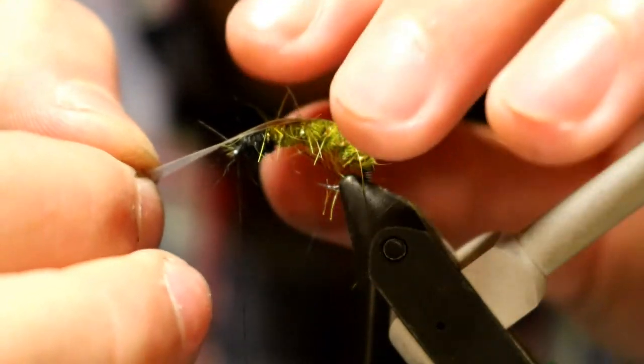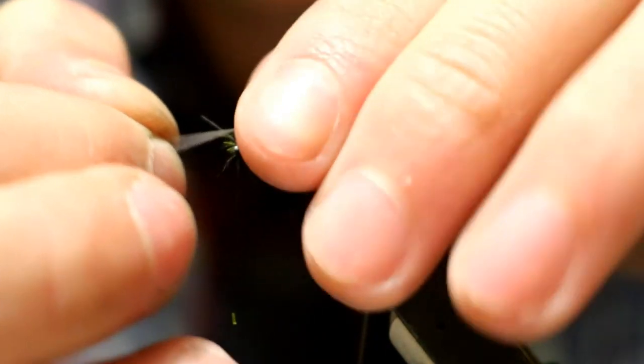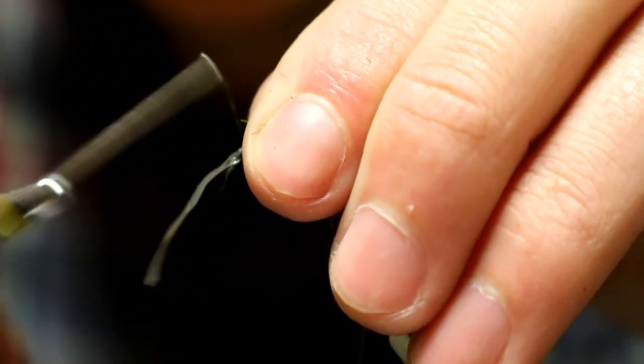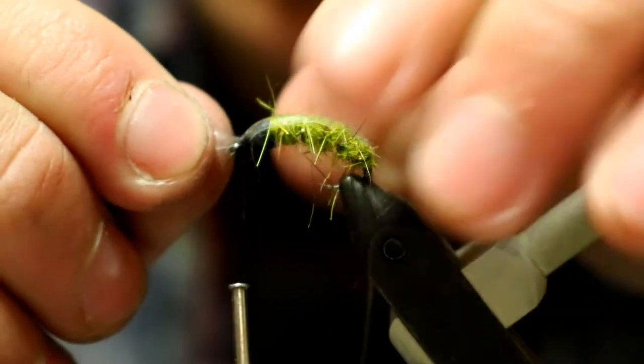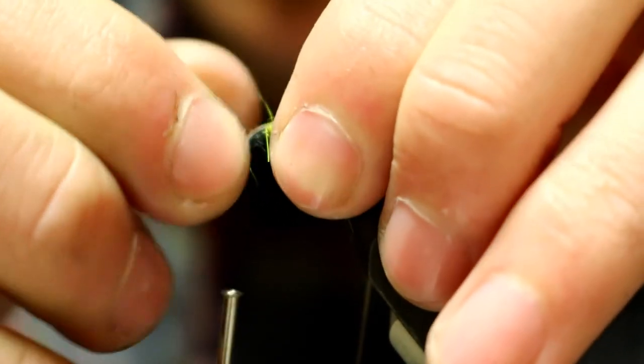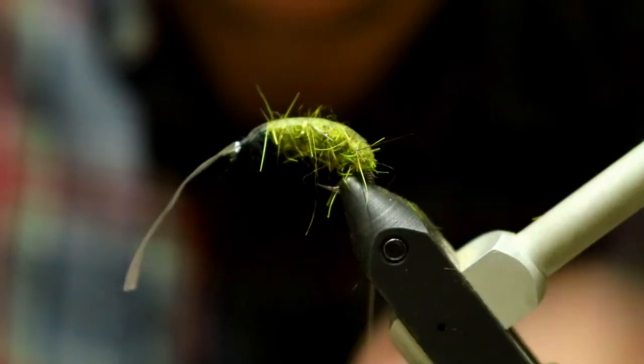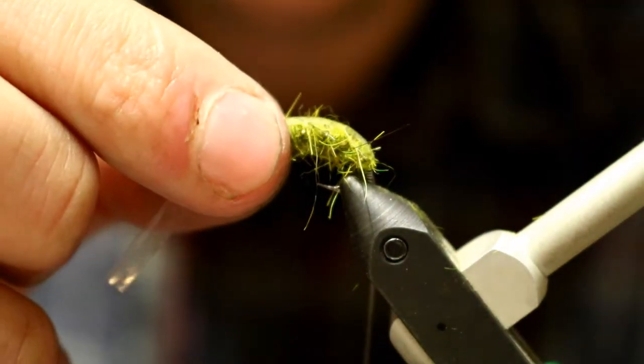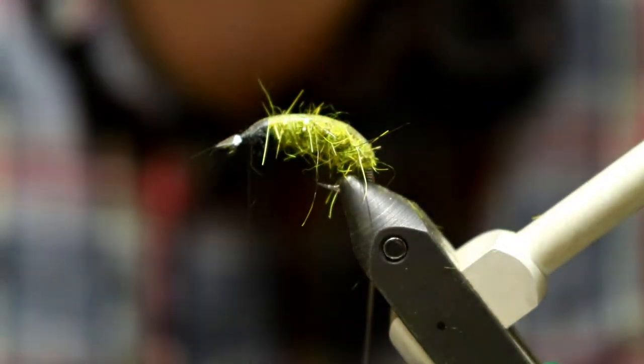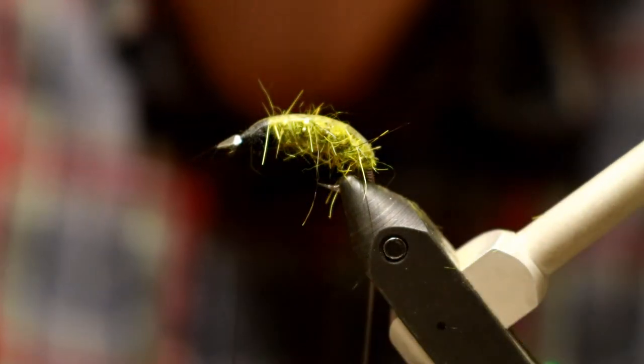So then next what we're going to do is take our scud back. And the way I like to put this material on, because it is a huge pain, is to tie it on like that and then I'll take it, keep it level on onto the back of the fly there and pull it tight. Then I'll go back, give it a couple more wraps. Half hitch for security and trim off most of my tag. You want to leave a little bit of tag just in case it does pull itself out, then you can go back and fix it.